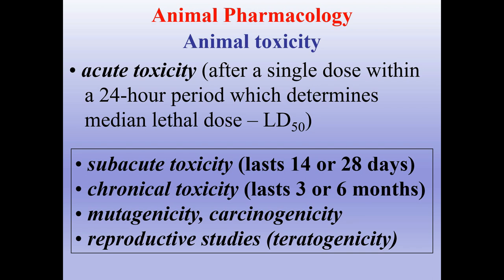Other types of toxicity testing include subacute toxicity (up to one month), chronic toxicity (up to six months), mutagenicity, carcinogenicity, reproductive studies, and teratogenicity.